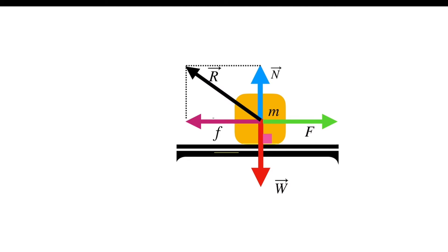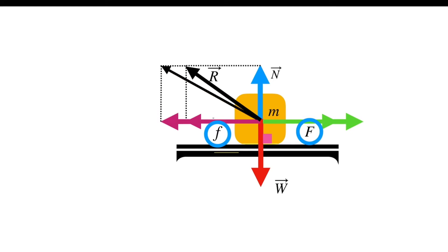We know the static frictional force is a self-adjusting force and is always equal and opposite to the applied force. As we increase the applied force, the friction force also increases in the same proportion and keeps the block at rest. Because of this change in frictional force magnitude, the resultant force R also changes, and so does the angle of friction.